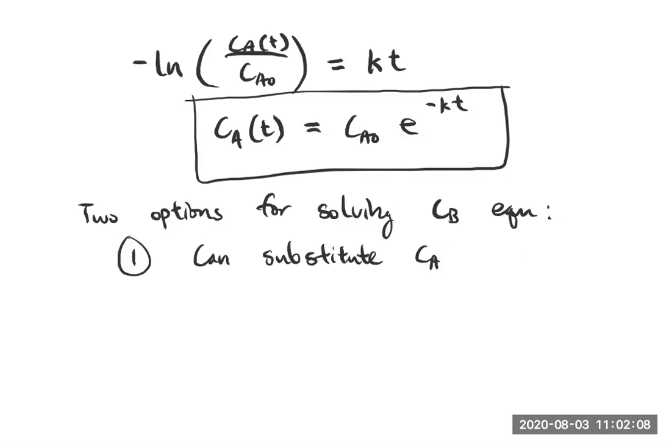that we're going back to this DCB DT equals KCA. So we can try to substitute this CA with the solved CA as a function of T and then integrate.